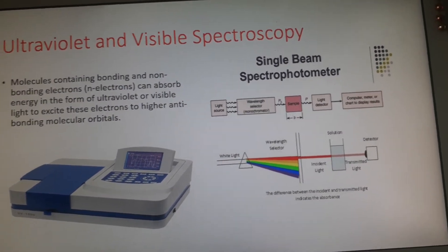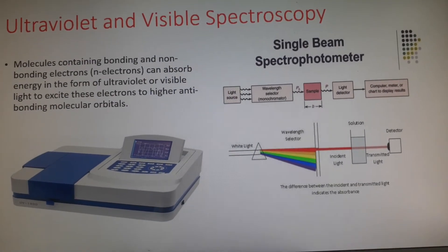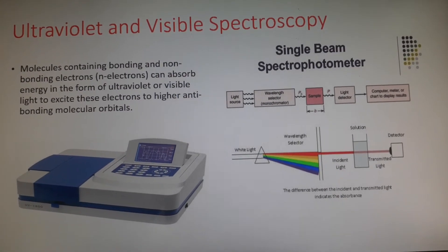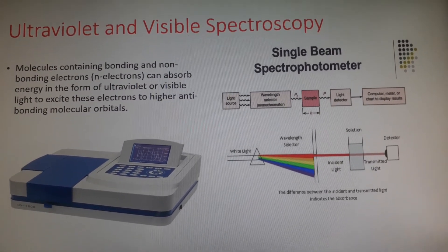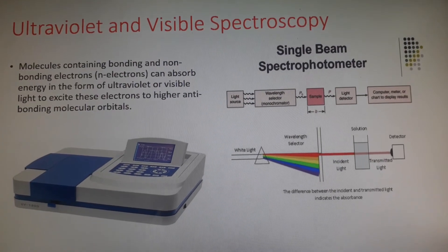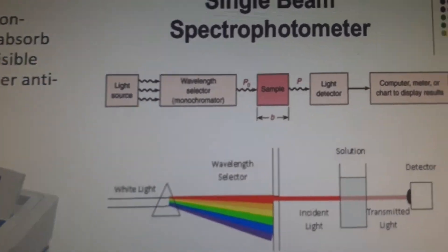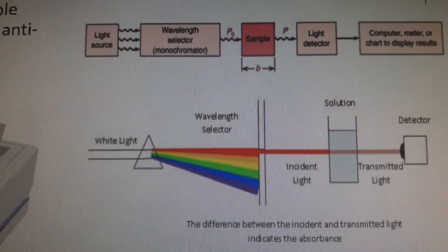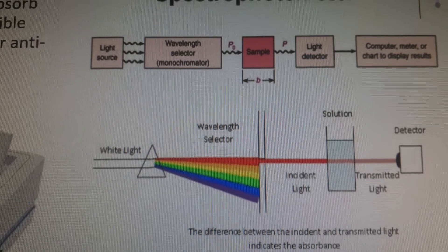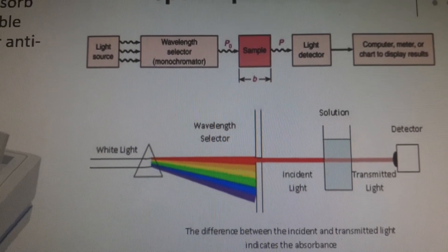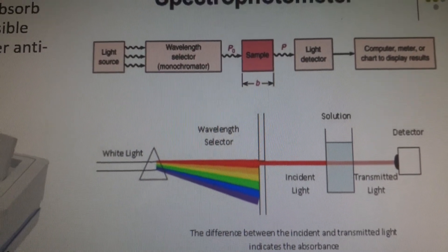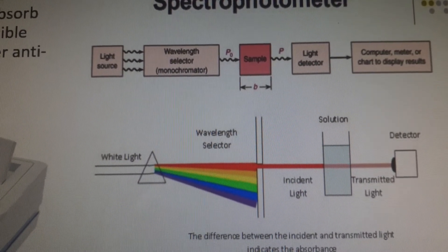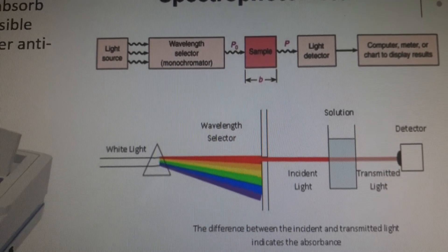In UV-visible spectroscopy we have two forms: one is called a single beam spectrophotometer and the other is called a double beam spectrophotometer. In the single beam spectrophotometer, as seen in the diagram, we have the light source, then the selected wavelength passes through a monochromator which acts as a filter, and the desired wavelength passes through. The light then passes through the sample, and the absorbance depends on the concentration as per Beer-Lambert's law.